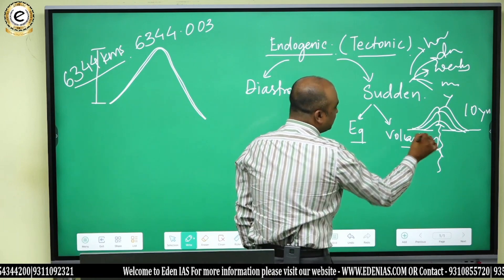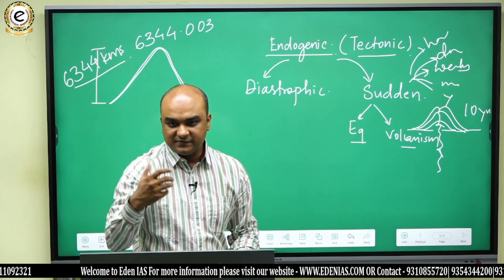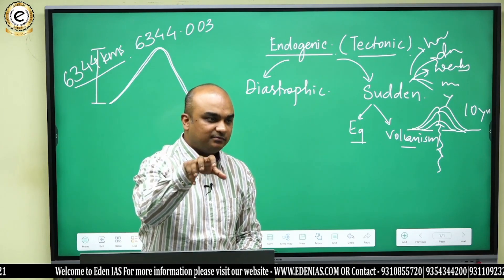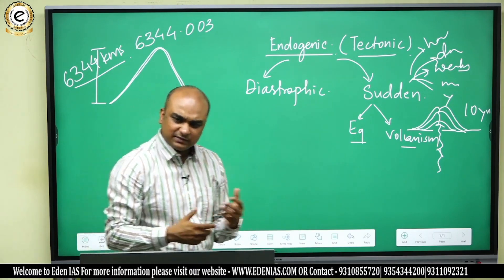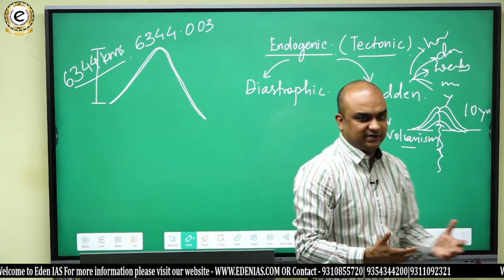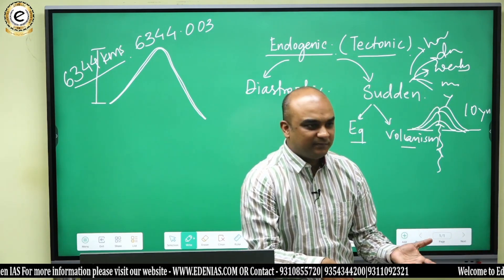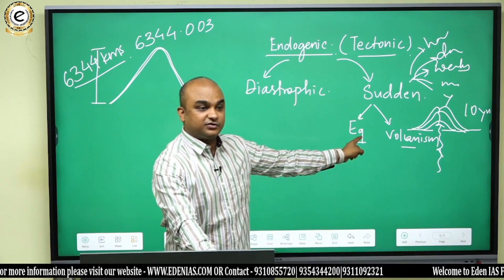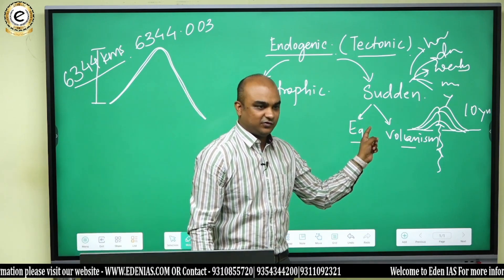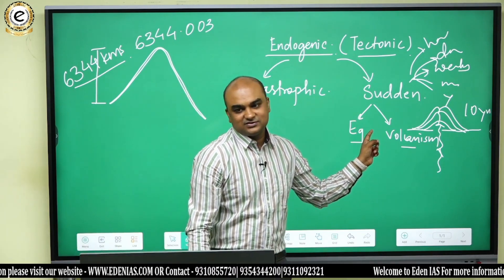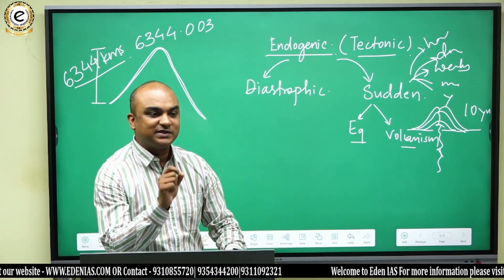Earthquakes and volcanism — if there is an earthquake in a crowded place or volcanism in a densely populated area, it will bring disaster for the people. That is why these forces are also known as catastrophic forces. So you have diastrophic forces and catastrophic forces. But it is not nature that kills — it is human activity or human tinkering with nature that kills. At least environmental determinists would say this.